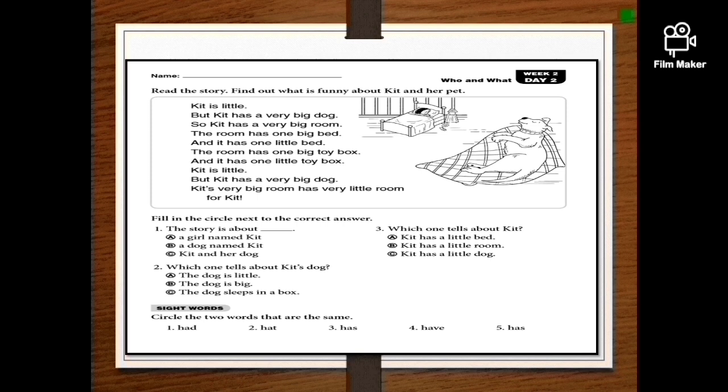Fill in the circle next to the correct answer. The story is about: a girl named Kit, a dog named Kit, Kit and her dog. So the story is about Kit and her dog.